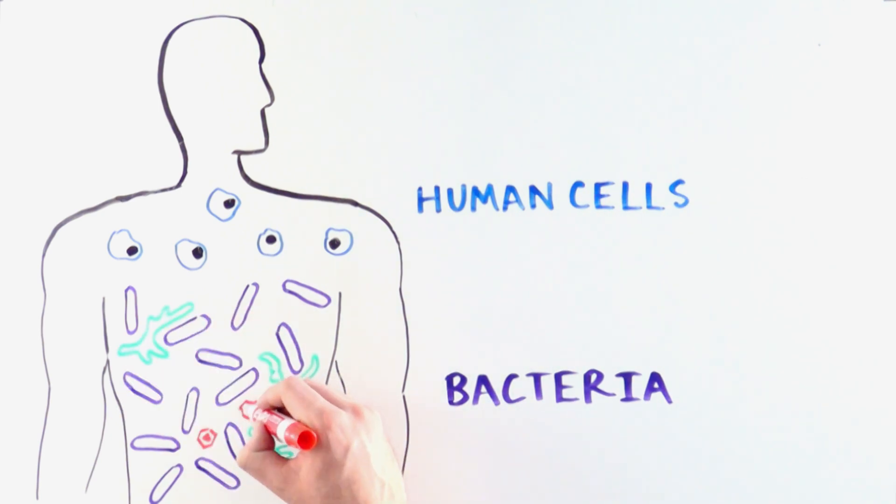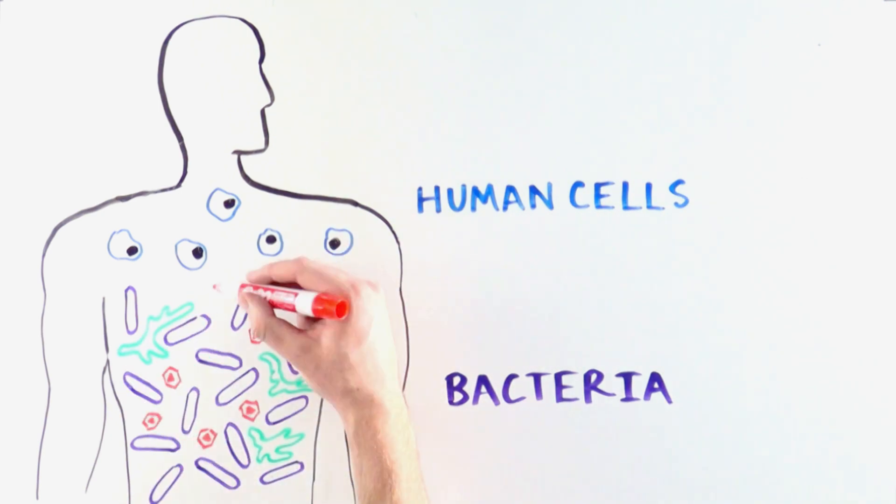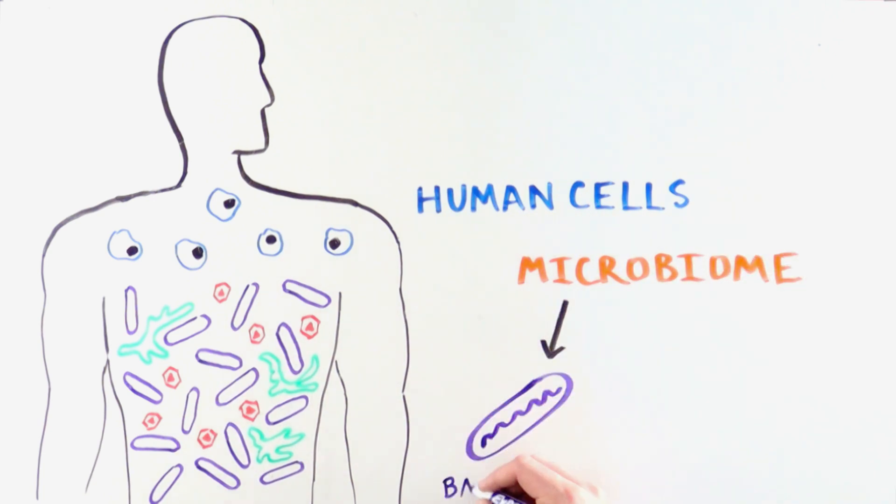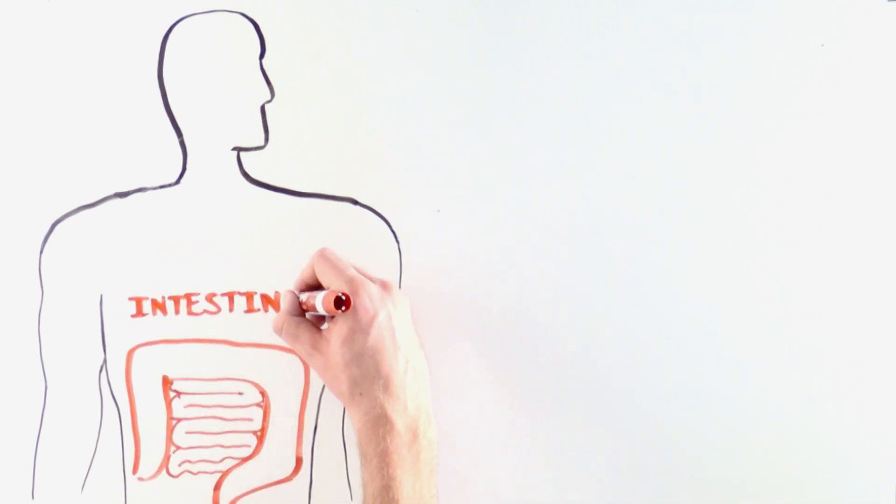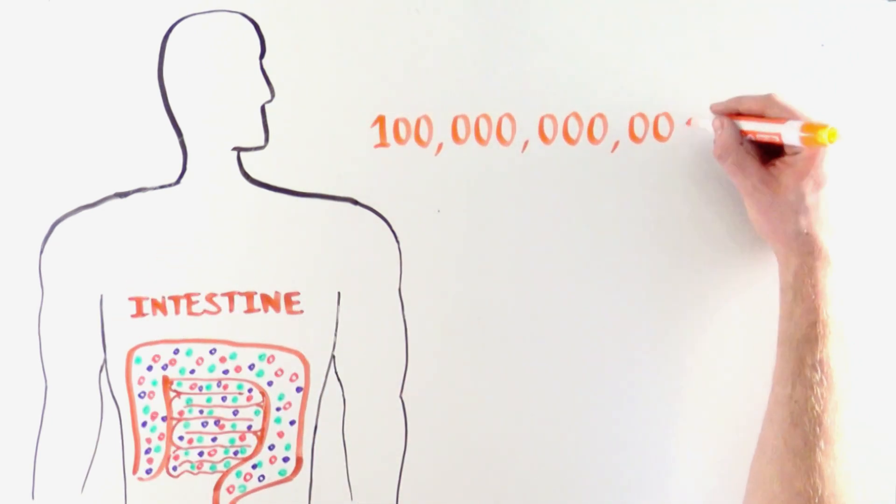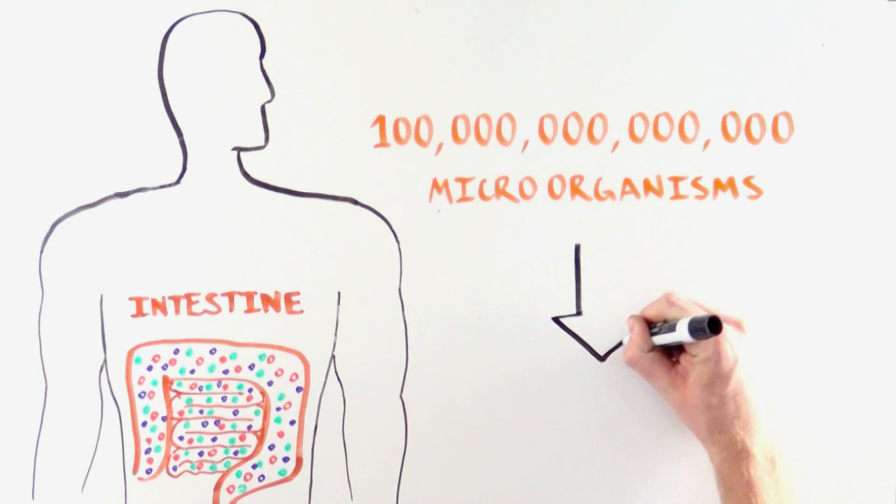All of the microorganisms that live in and on our bodies compose the microbiome, including bacteria, fungi, and viruses. Our intestines host the largest microbial community, 100 trillion microorganisms, that make up the gut microbiome.